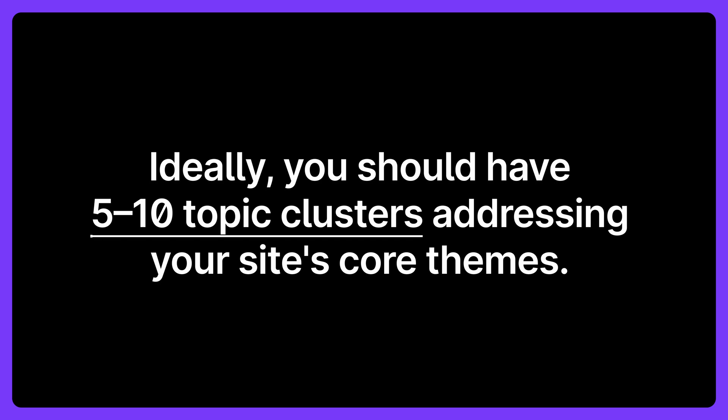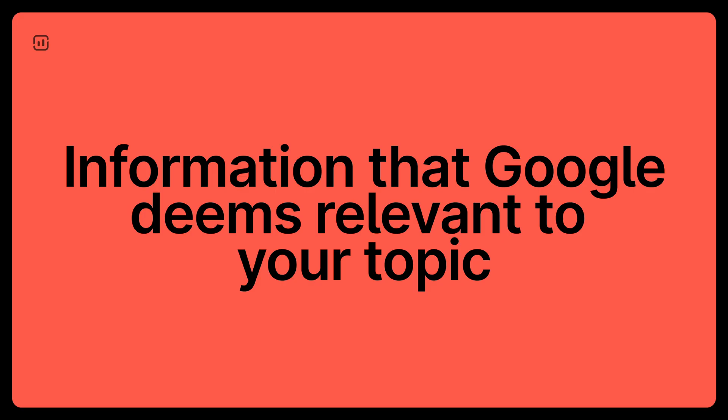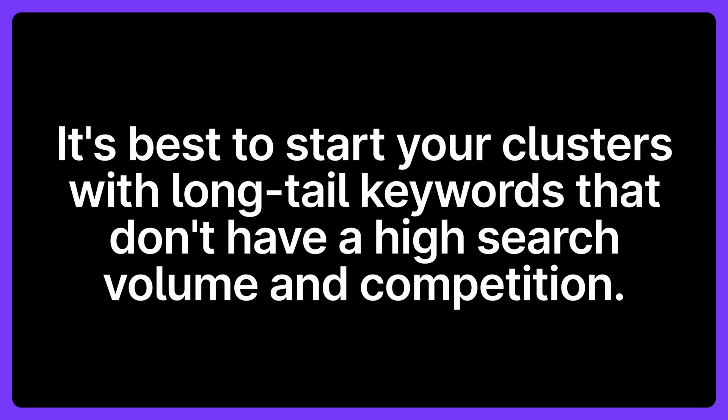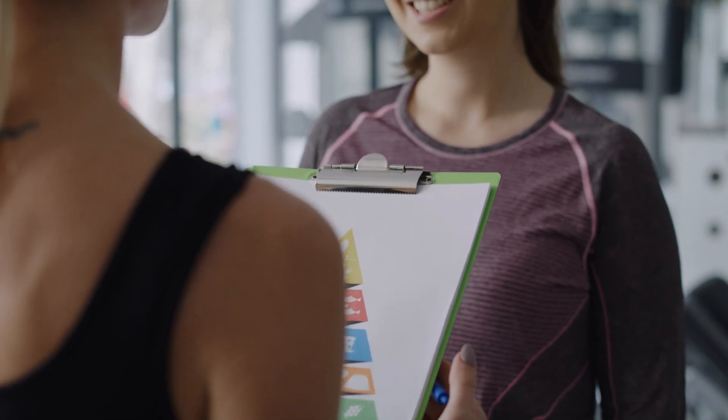Once you're done with one cluster, you can then move on to the next one. How many topic clusters should you create? The honest answer is it depends, but ideally you should have 5 to 10 topic clusters addressing your site's core themes. These numbers aren't set in stone though. Think of them as a rule of thumb, with the exact number of clusters depending on factors like information that Google deems relevant to your topic, how many clusters your competitors have, topic availability in your niche, and your existing content. It's best to start your clusters with long-tail keywords that don't have a high search volume and competition. By doing so, you can drill a small hole in your niche which you'll later expand as you build more authority. That's why it is important to rely on keyword research tools like Surfer when building your topic clusters.